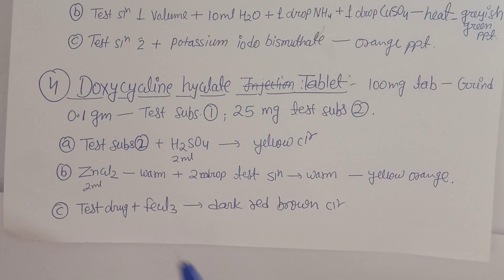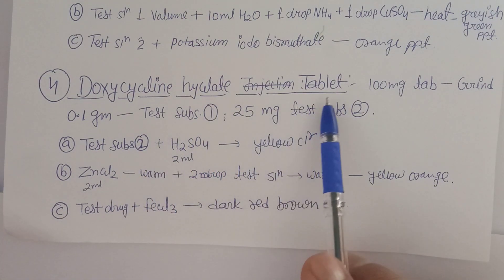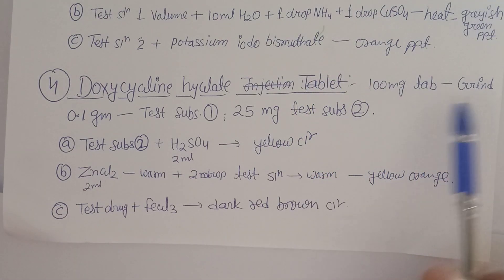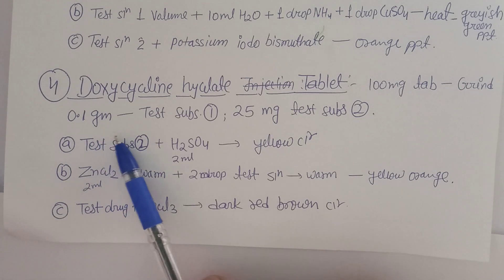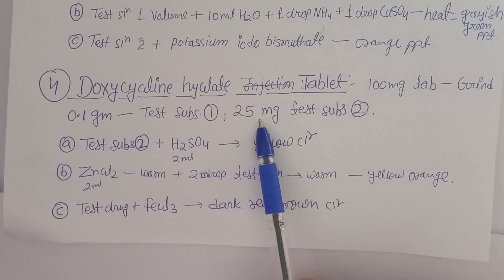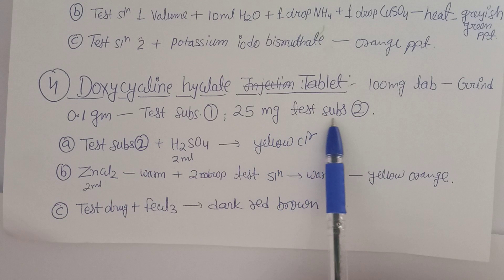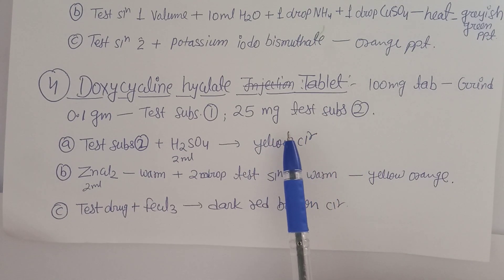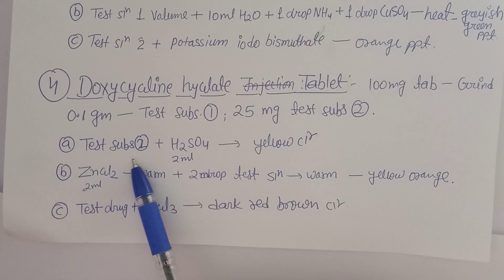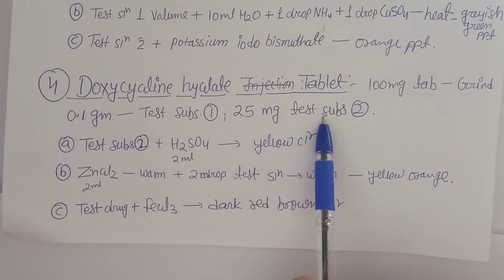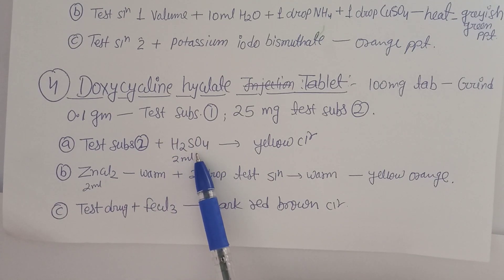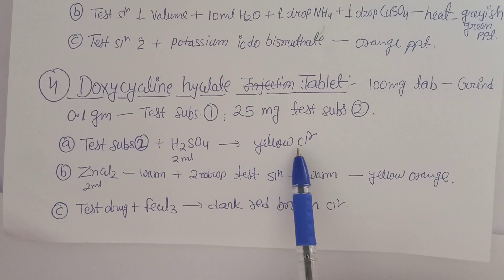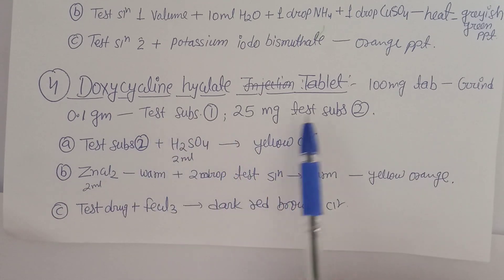The fourth drug, starting from alphabet D, is doxycycline hyclate tablet — a solid dosage form of 100 mg. Grind the tablet: 0.1 g becomes Test Substance 1 and 25 mg becomes Test Substance 2. First test: to Test Substance 2 (25 mg), add 2 ml of H₂SO₄. A yellow color confirms the presence of doxycycline in the tablet powder.